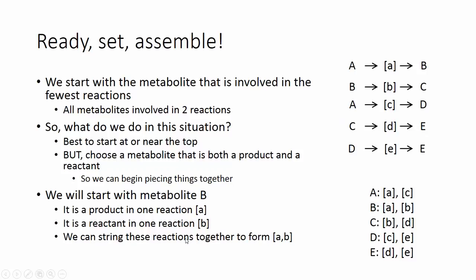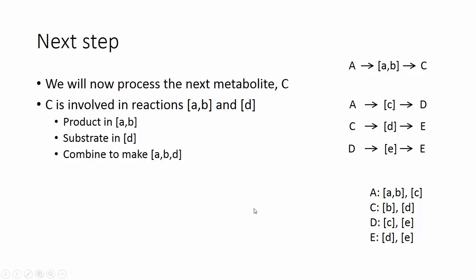The logical thing to do would be to string these reactions together to form A, B. So we'll remove these individual reactions and put together A yields C. And this is our coupled reactions A and B. We have our mini-pathway here, producing C here. Now let's process the metabolite C.